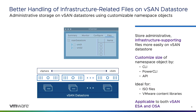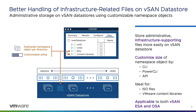With vSAN 8 Update 1, we aim to make day-to-day operations easier for administrators. Many customers have wanted to store infrastructure-supporting files like ISOs and VMware content libraries on a vSAN data store, like they would with a storage array. vSAN 8 Update 1 now allows administrators to customize the size of namespace objects, making it easier to store ISO files and VMware content libraries. The size of the namespace object can be specified to meet the capacity requirements of their use, and this new flexibility is also used by some of vSAN's internal needs, such as logs for performance and troubleshooting.